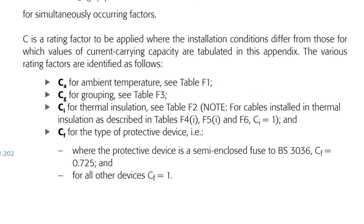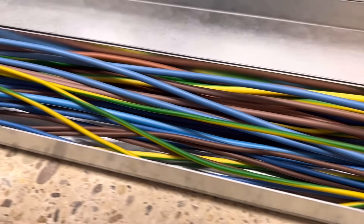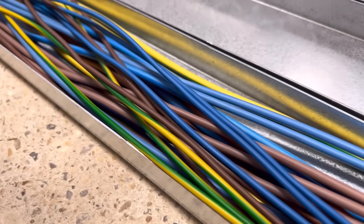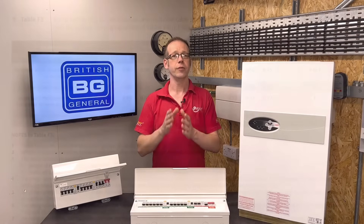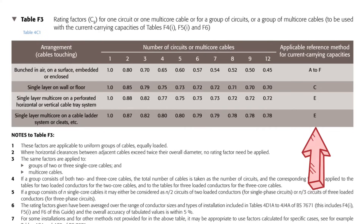CG is the rating factor for grouping. Grouping is when two or more cables are run together, and we need to take it into consideration because of the heat dissipation issue — cables in proximity make it harder for each to dissipate heat, as each is affected by the heat from its neighbour. We get the information from table F3 of the on-site guide. Down the left-hand side are four potential installation methods: bunched together in any way (on a surface, buried in a wall, or in trunking); in a single layer on the wall or floor; in a single layer on tray; and on cable ladder or similar. Across the top is the number of circuits grouped together from 1 to 12. The final column shows reference methods for the way cables are installed.